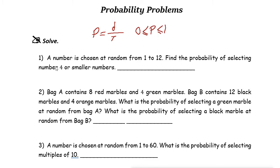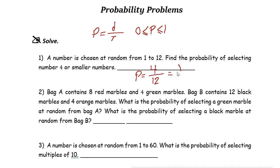Let's take a look at some examples. A number is chosen at random from one to twelve. Find the probability of selecting number four or smaller. We know the total options here is twelve numbers. Four or smaller means we have one, two, three, four — so we have only four desired outcomes. So four out of twelve, which is just one-third.